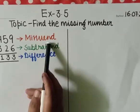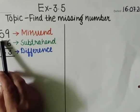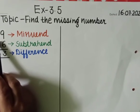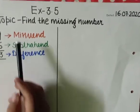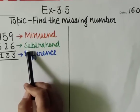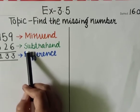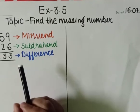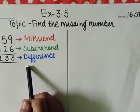So first of all, what is the minuend? The number which is going to be subtracted, that number is known as the minuend, and the number which we are going to subtract from the given number, that number is known as the subtrahend, and the answer is known as the difference.